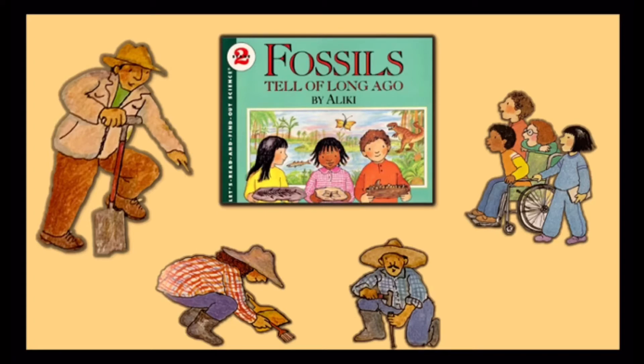When the big fish died it sank into the mud at the bottom of the sea. Slowly the soft parts of the fish rotted away. Only its hard bones were left. The bones of the fish it had eaten were left too. The skeleton of the fish lay buried and protected deep in the mud.